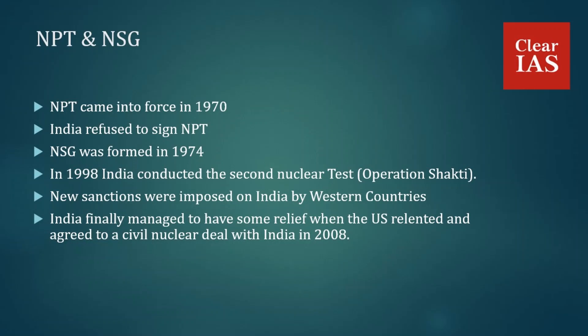In the pre-2005 period, NSG denied fuel for India's Tarapur Atomic Power Station, while the US used the MTCR — Missile Technology Control Regime — to prevent the transfer of cryogenic engine technology from Russia to India. India finally managed some relief when the US relented and agreed to a civil nuclear deal in 2008, under Section 123 of its Atomic Energy Act of 1954.